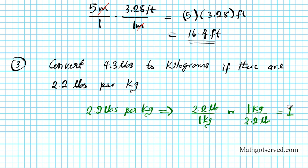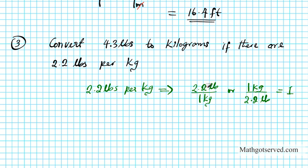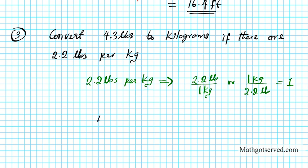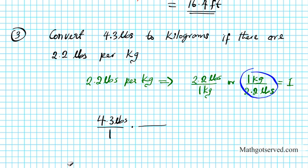Remember, 1 is the multiplicative identity — when you multiply anything by 1, you're not changing the measure. So one of these two will apply to this scenario. We're starting with 4.3 pounds, so we write 4.3 pounds as a fraction over 1, times — and we need to pick one of these options. Since we have pounds upstairs, we need the conversion factor with pounds downstairs so the pounds will cancel. So the correct choice is 1 kilogram over 2.2 pounds.